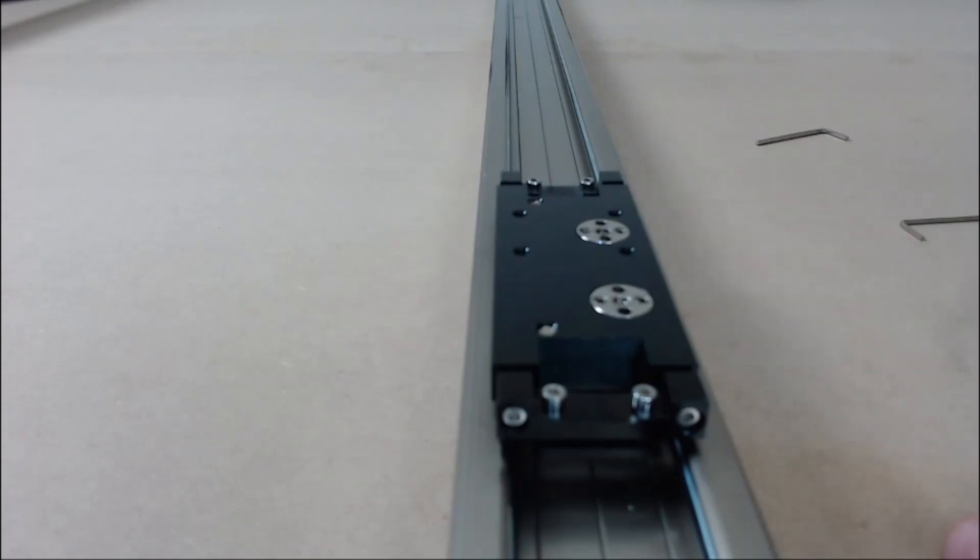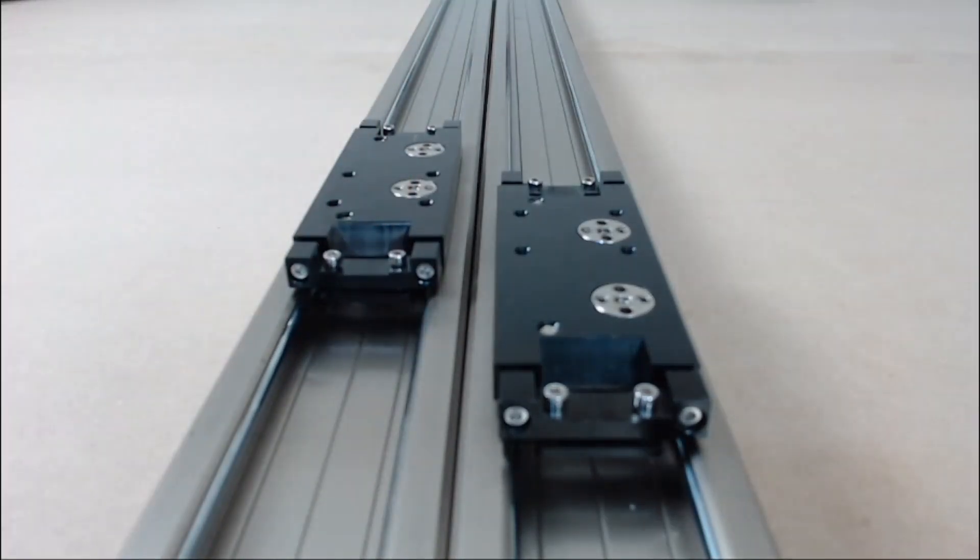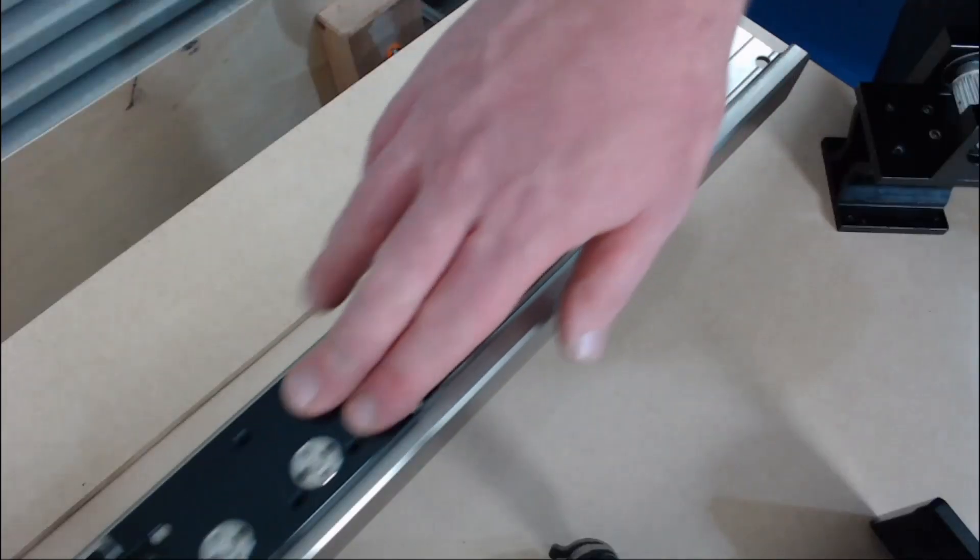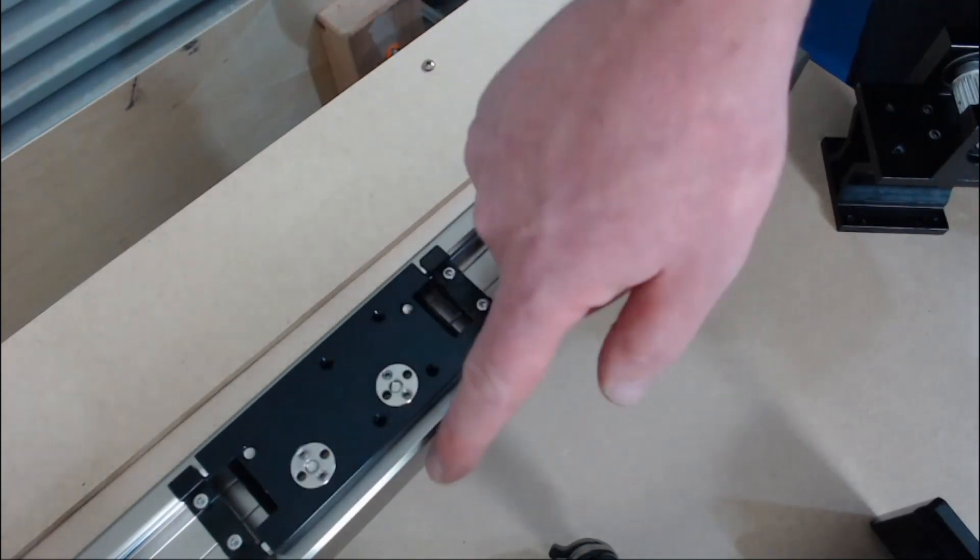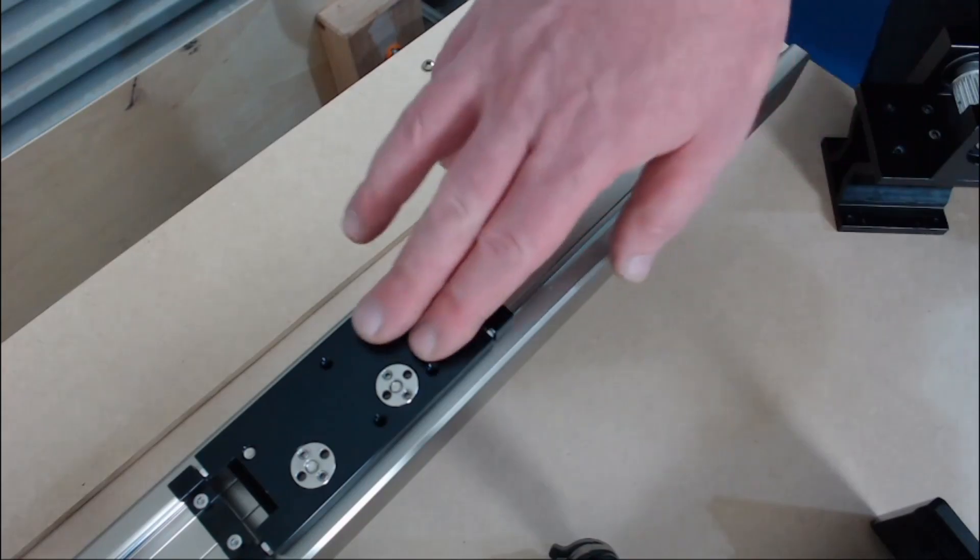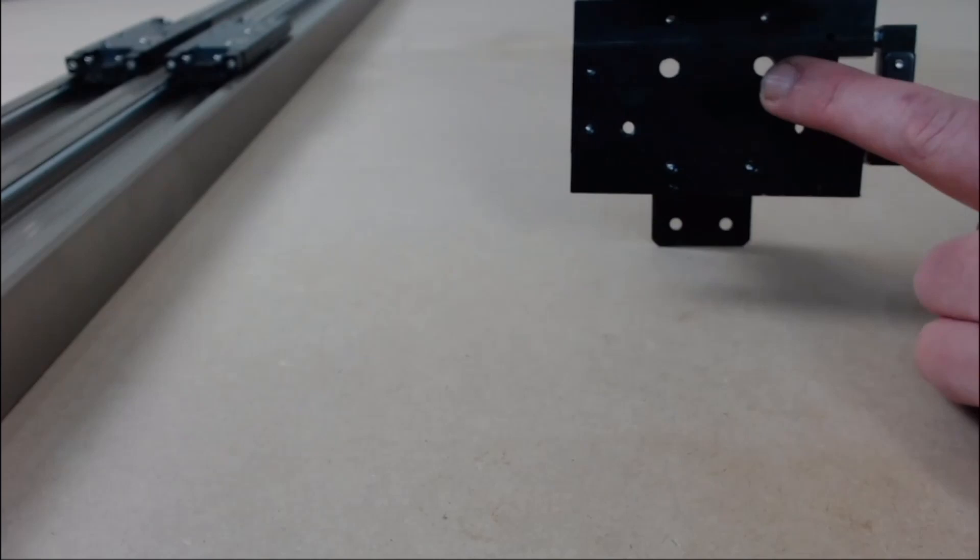That's the first one done and we repeat that for the other one. So when you put in these rail carriages make sure that you put the cam nuts on the inside edge of the rail.